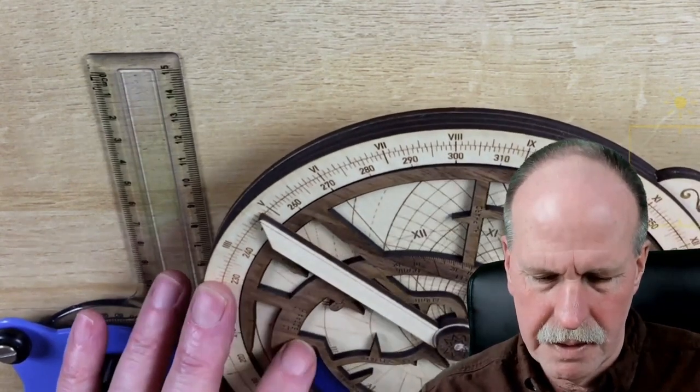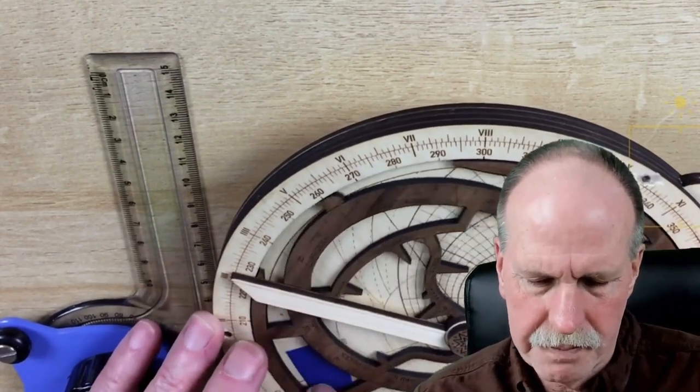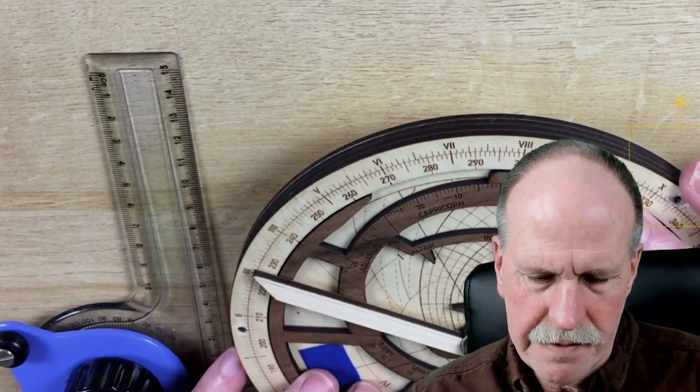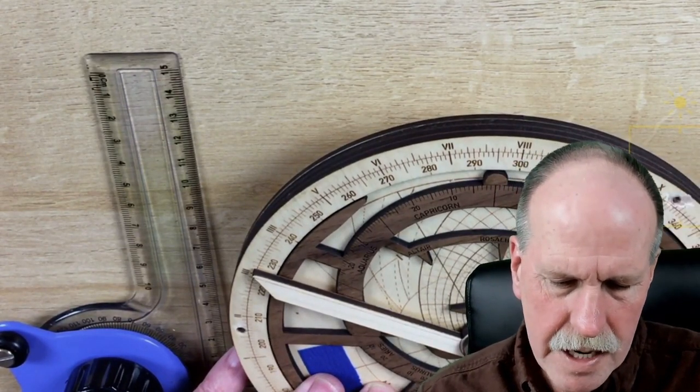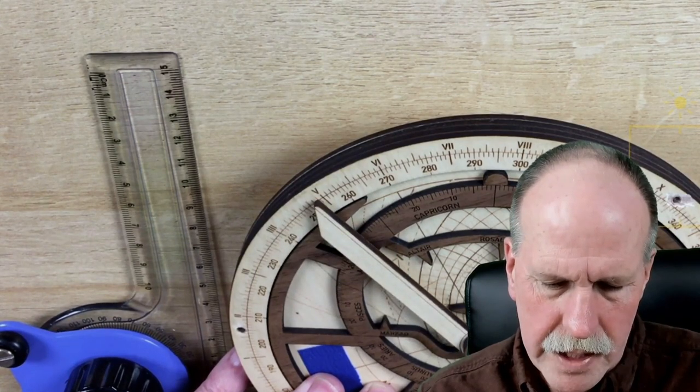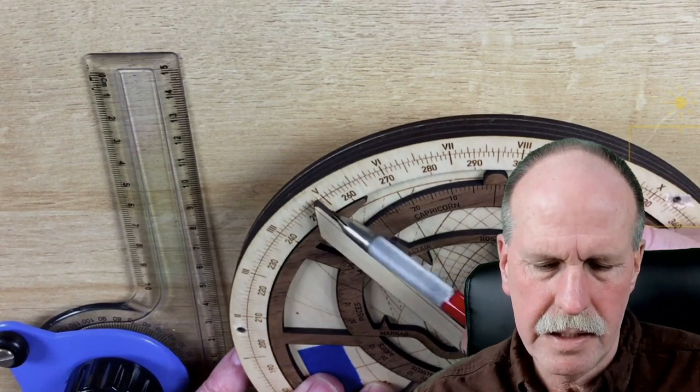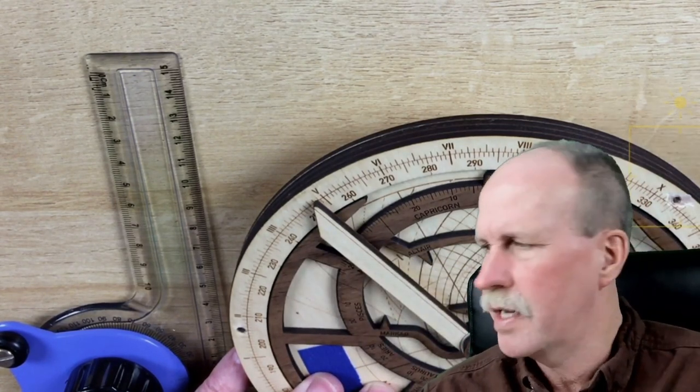So once again we're going to go to Aquarius and it's going to be the seventh day of Aquarius and we're going to find the time of astronomical twilight. We line it up with the 18 degree dotted line and we get just before 5 a.m. So it's going to be about 5:50 a.m.